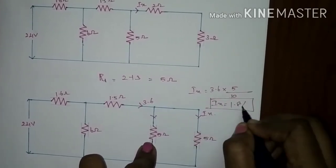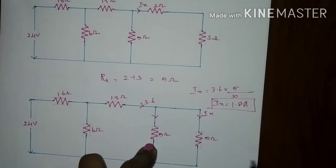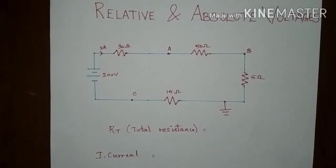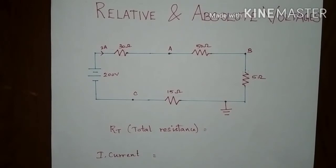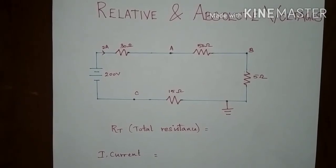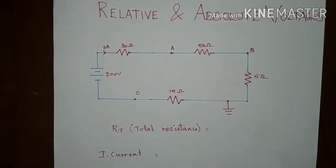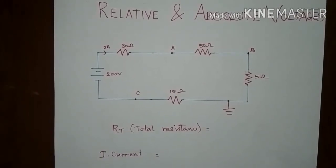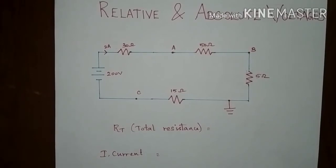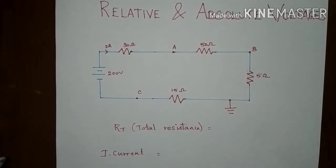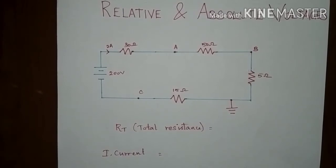It is a very simple problem. Now let us move on to the topic of relative and absolute voltages. In an electrical circuit, electrical voltage at any point can be quoted with respect to, or with reference to, any other point in the circuit.